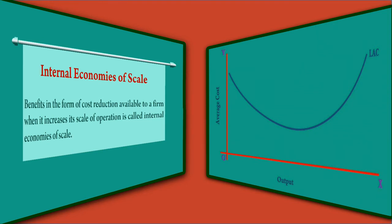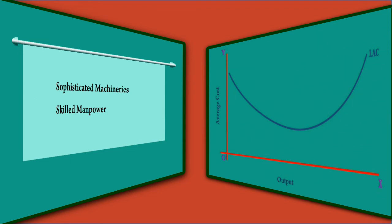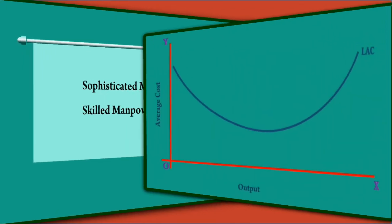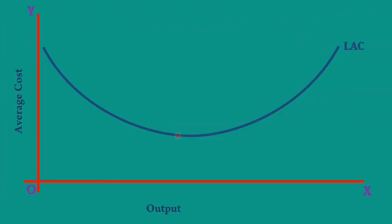It arises because, as the firm grows in size, it can employ sophisticated machineries, skilled manpower, etc. This tendency continues till minimum point is reached.